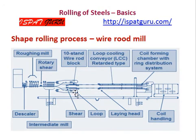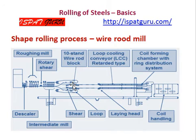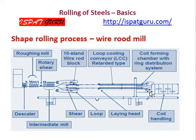The layout of a wire rod mill includes a reheating furnace, a roughing strand, a finishing strand, a wire block, a no-twist wire block, a heat treatment area, a cooling conveyor, and a coil forming and coil hanging area.